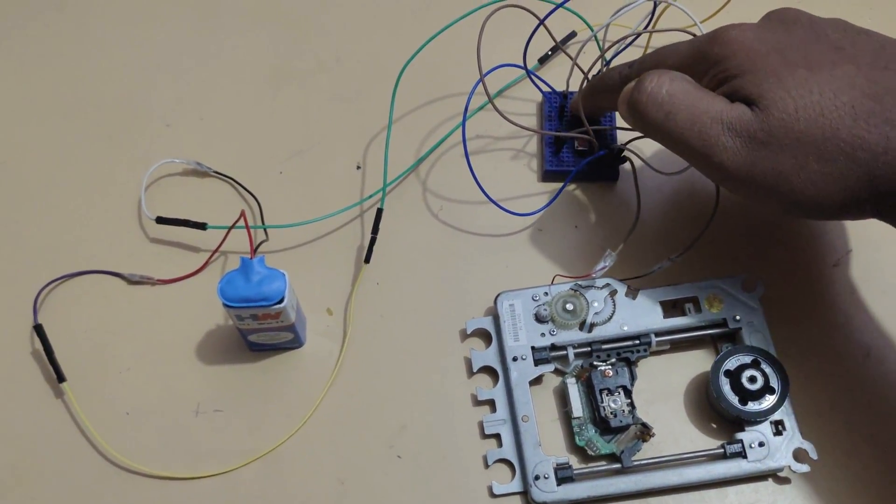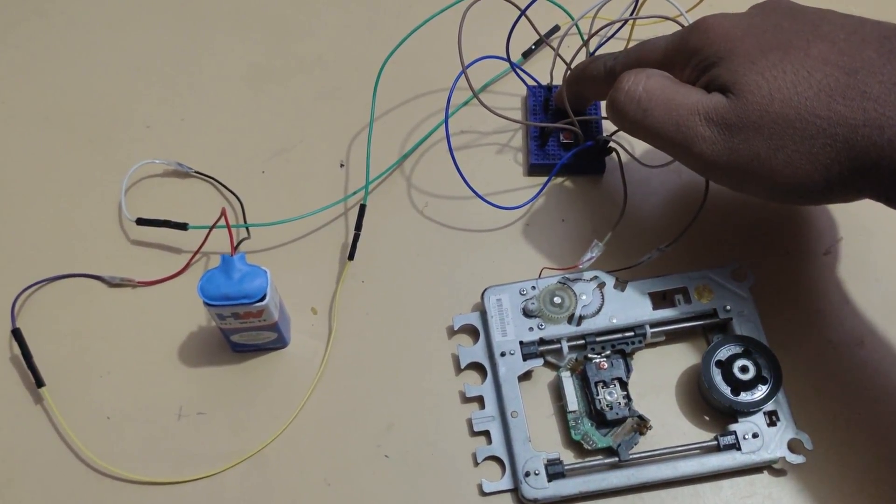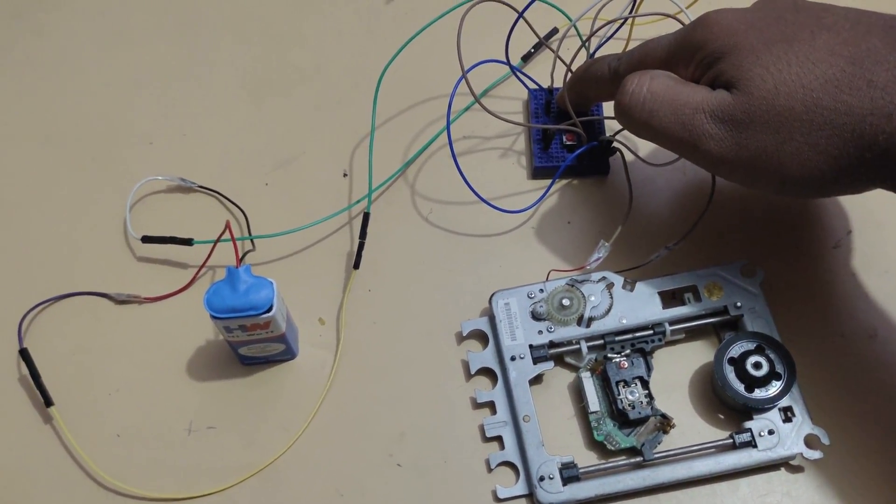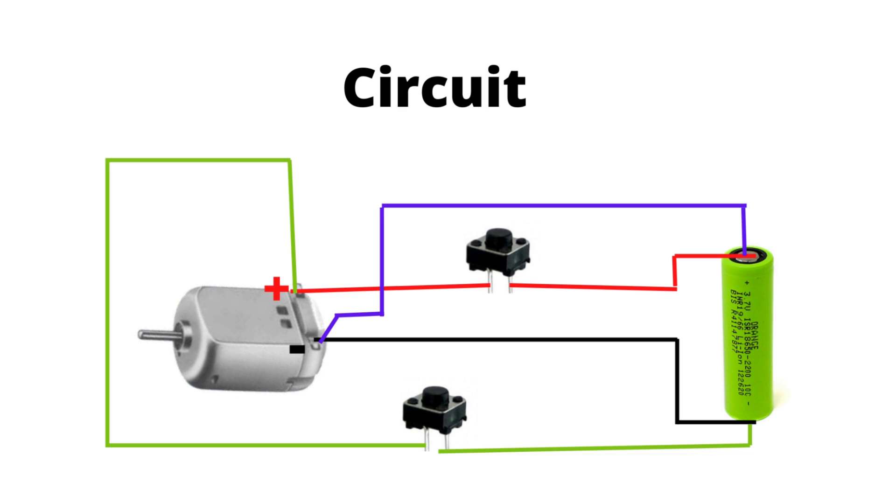Now, instead of pulling wire by our hand, we can control it using a linear actuator like this. This is the circuit diagram for making the linear actuator.